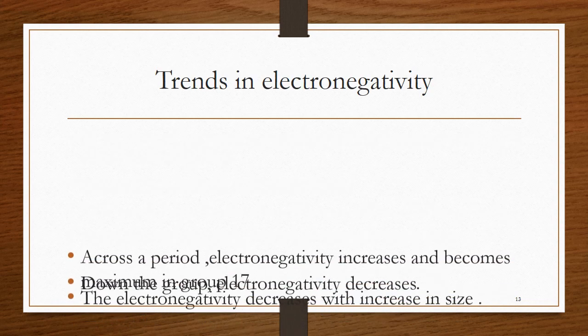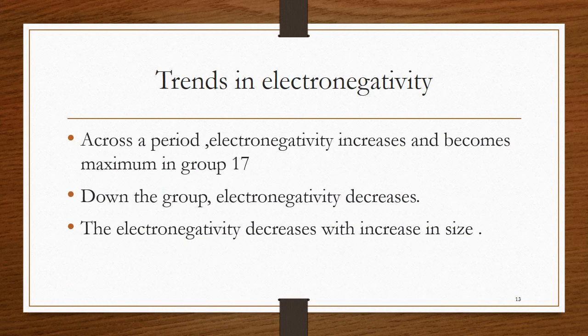What are the trends in electronegativity? Across a period, electronegativity is found to increase and becomes maximum in group 17. Group 18 elements, however, do not show electropositivity or electronegativity. Down a group, electronegativity is found to decrease because the size keeps on increasing.